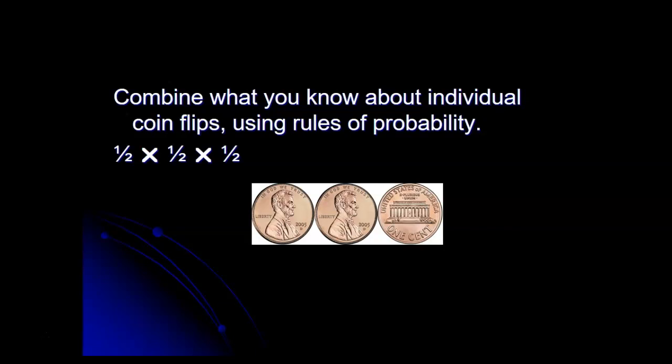So for all three of the coins to come up heads, the probability would be one-half times one-half times one-half. And that's based on a rule that we'll be talking about more in an upcoming section. But one-half times one-half times one-half does come out to be one-eighth.